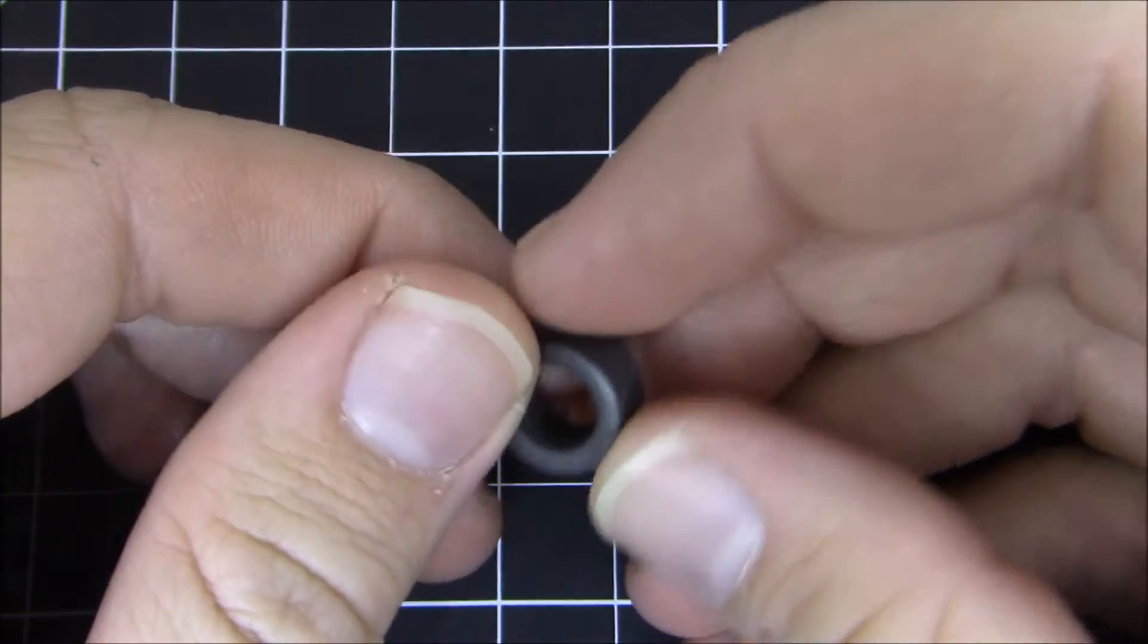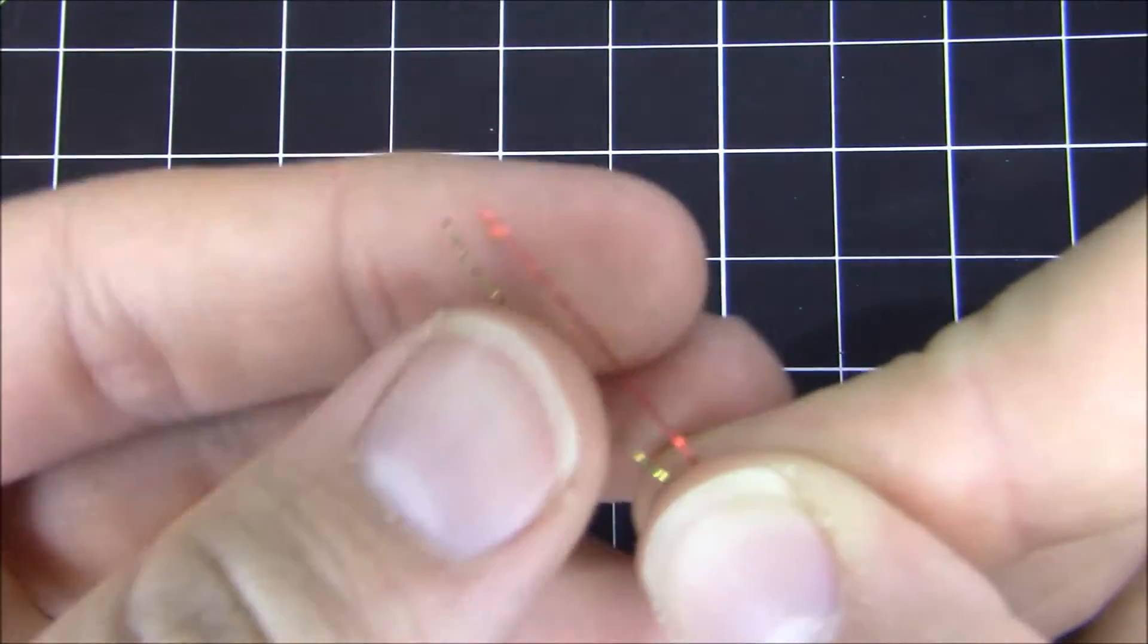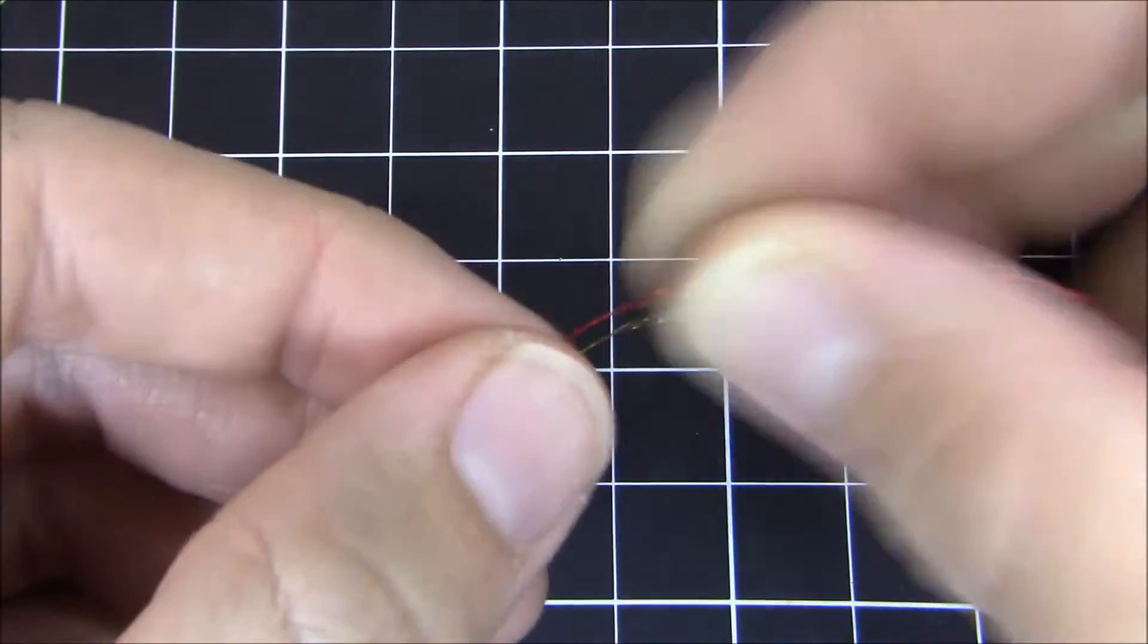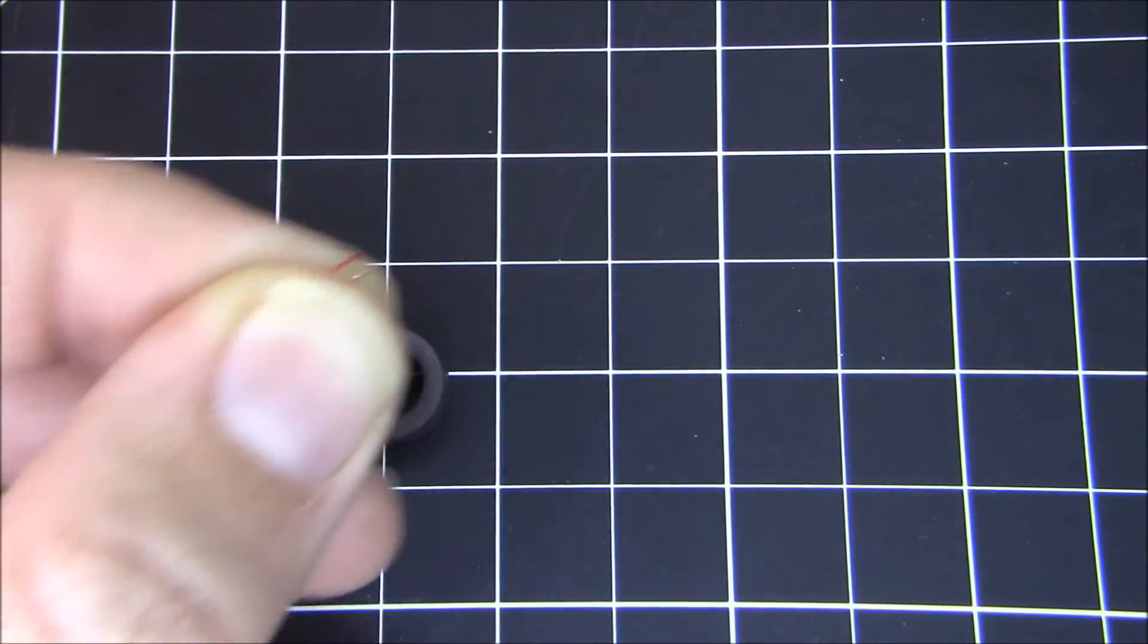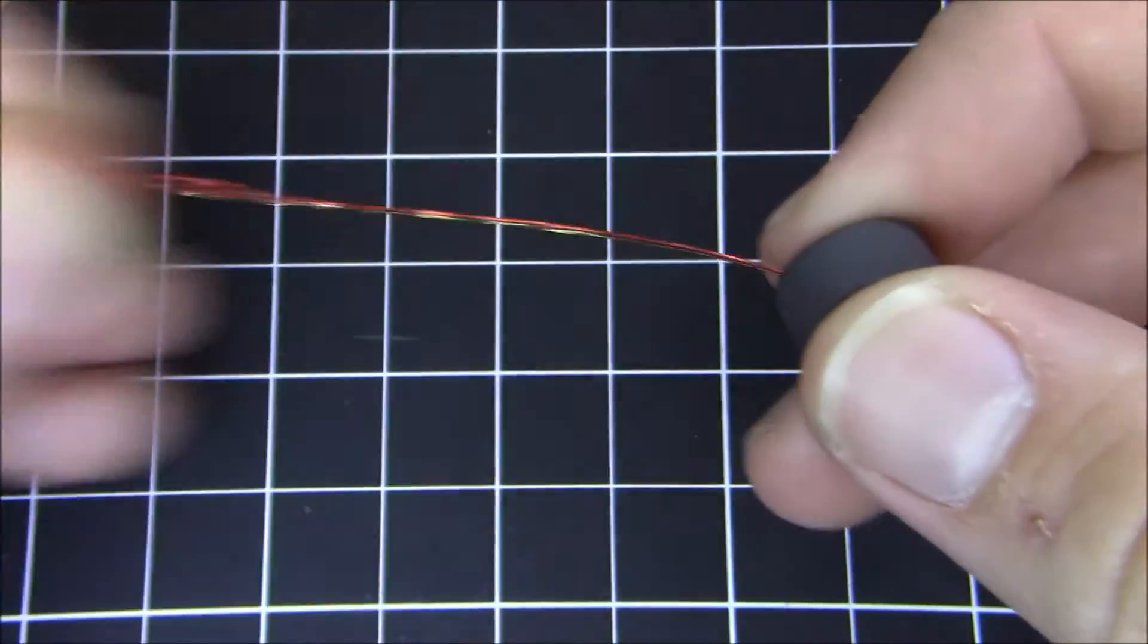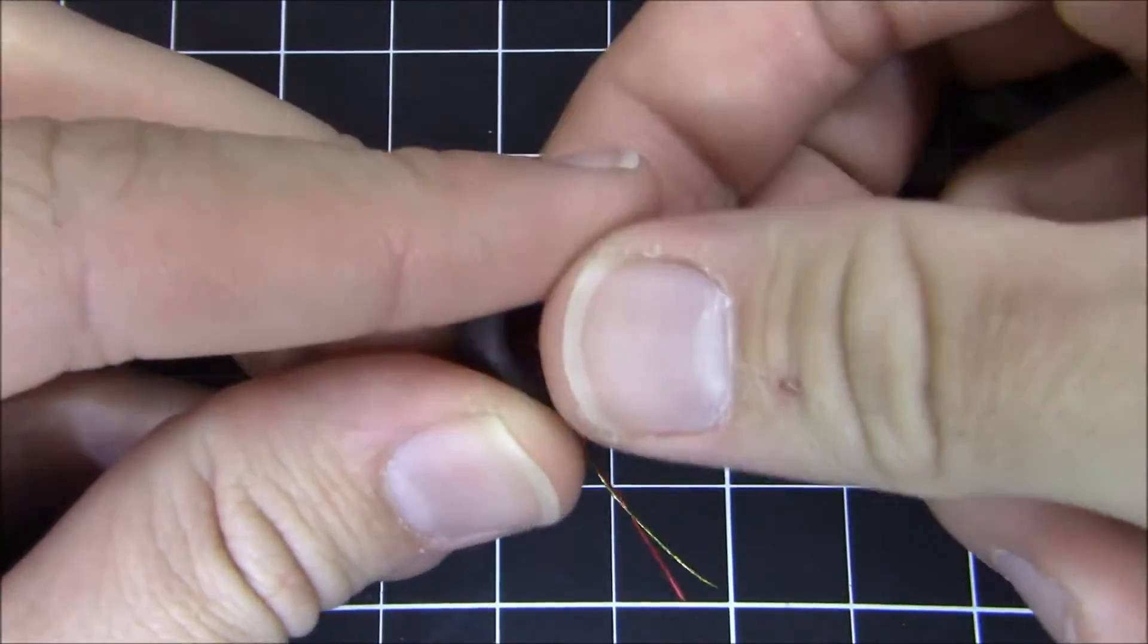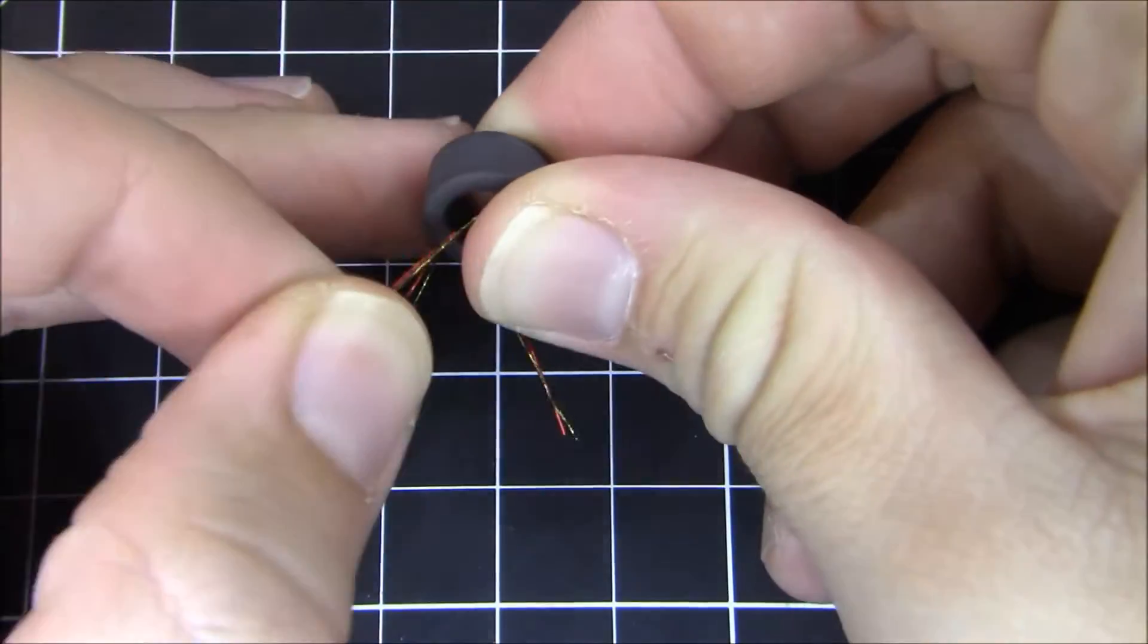First thing you need to do is take your toroid and we're gonna wrap enameled wire around it. So you need to take your enameled wire. You need to get about a foot of each color. And then chop off the excess. Then what we're gonna do is wrap these two wires in unison around this toroid. So what you need to do is feed the wire through. Pull it all the way through.